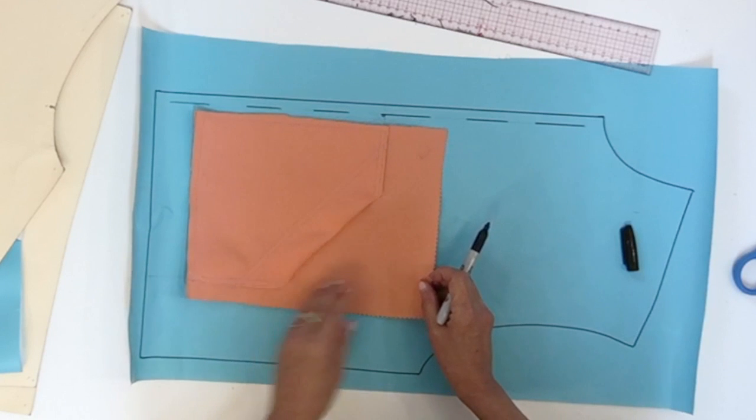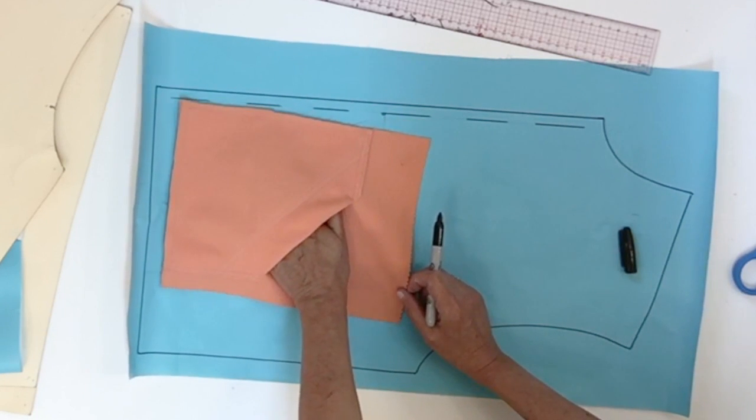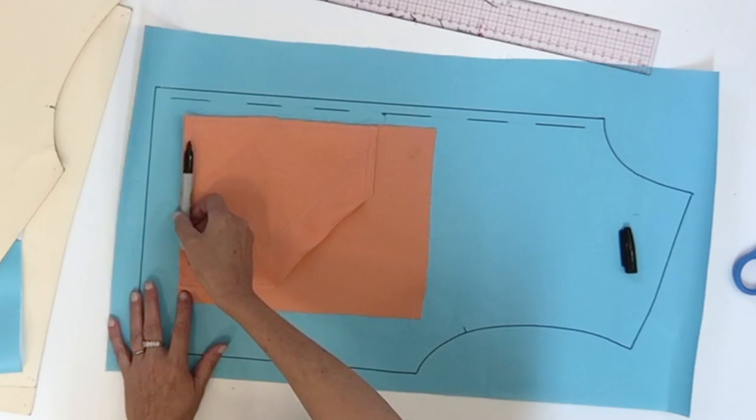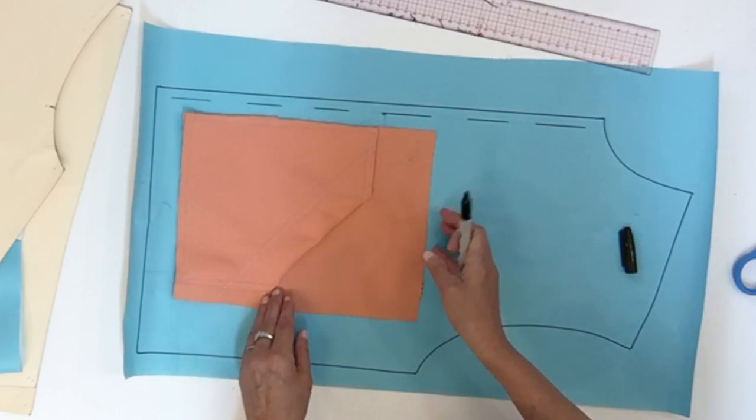Now this is the kangaroo pocket that I will show you today. It will be attached at the center front and attached at the bottom of the jacket with a diagonal opening.